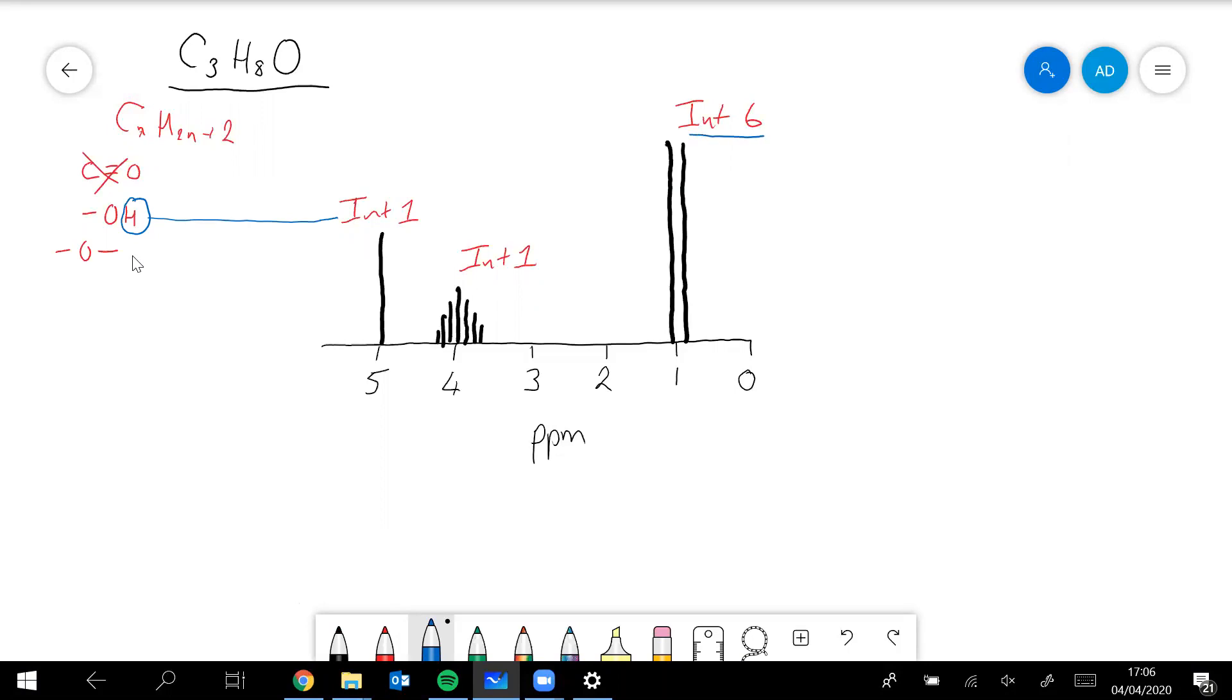Another thing which might strike you as a little bit odd here is this peak here which has got an integrated value of six, so you've got six hydrogens in the same environment as each other.